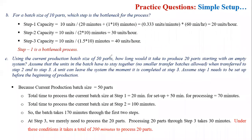So in a batch production system, if we are producing in batches of 50 and we want to produce 20 parts, we will see that it takes 200 minutes to produce those 20 units.